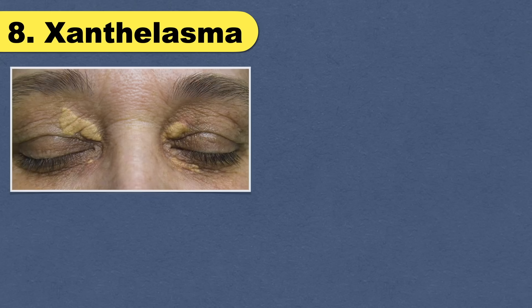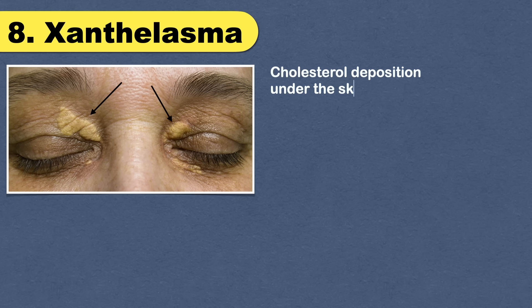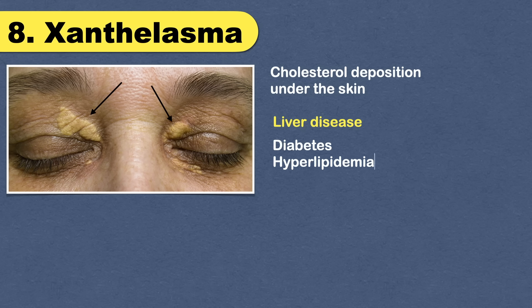Next is xanthelasma — a harmless yellow growth that appears on or by the corners of your eyelids next to your nose. It is due to cholesterol deposition under the skin. Having xanthelasma could be a sign of liver disease, but it is also associated with other conditions such as diabetes, hyperlipidemia, and thyroid problems.